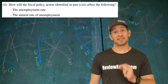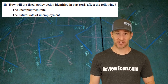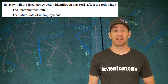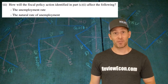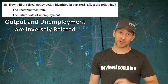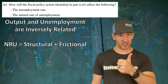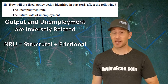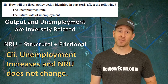For the second part of C, we need to identify what will happen to the unemployment rate and the natural rate of unemployment as a result of this contractionary fiscal policy. The contractionary fiscal policy will cause the aggregate demand curve to shift to the left, decreasing equilibrium output. That lower output will mean there's an increase in unemployment because output and unemployment are inversely related. For the natural rate of unemployment — structural unemployment plus frictional unemployment — since nothing in this question indicates that frictional or structural unemployment will change, the natural rate of unemployment is also not going to change. Just say unemployment increases and the natural rate of unemployment does not change.